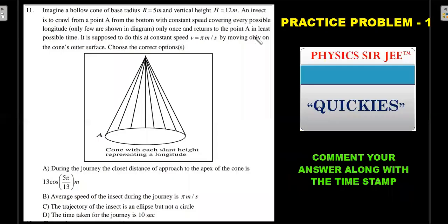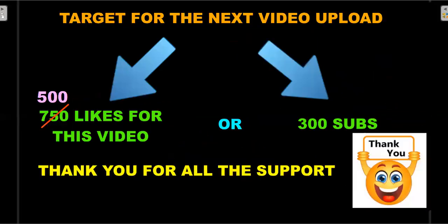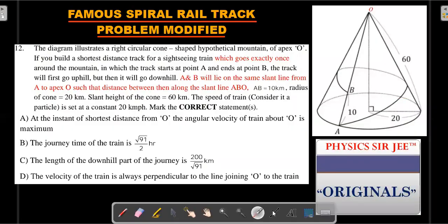Let me mark the answers. At the instant of shortest distance from O, which is point P, angular velocity of train about O is maximum. Obviously the speed is same, distance shortest, so angular velocity is maximum. This is correct. Journey time was √91 by 2, that was right. Length of downhill part we got 400/√91. This was wrong. Velocity of train is always perpendicular to line joining O - this is wrong because it did so only at point P. So A and B are the correct answers.